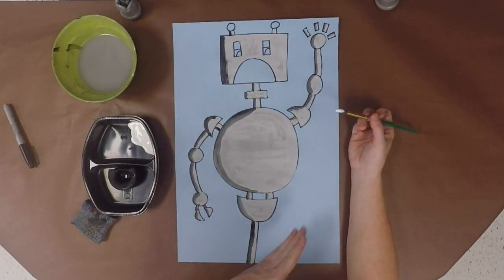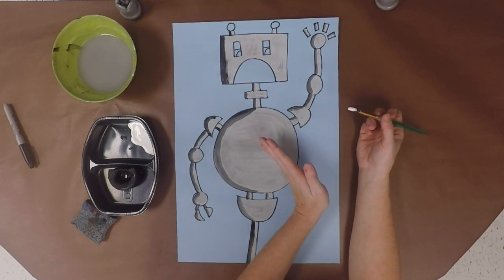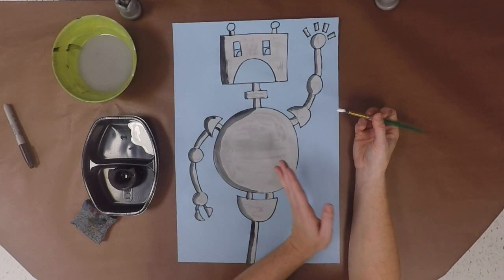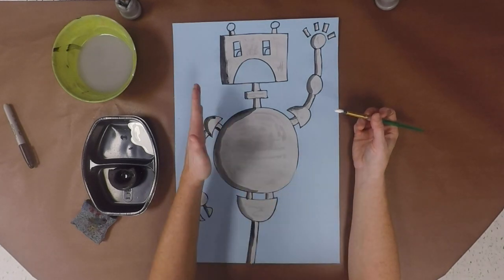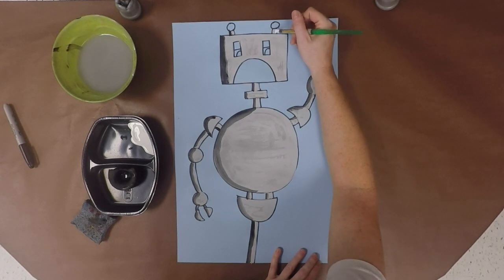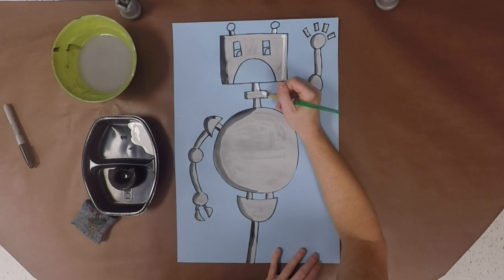So we're going to use the same process. Again, we're pretending like we're pointing a flashlight on one side of our robot and wherever we think the light is hitting, that's where we're going to have highlights. And on the opposite side, we've already got our shadows. So I'm just going to start at the top and work my way down with a little white paint, and I'm just going to paint some highlights on my robot.